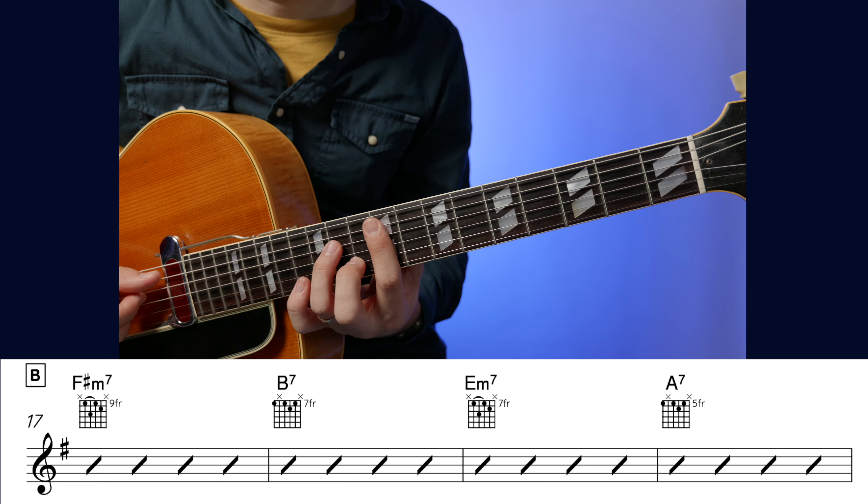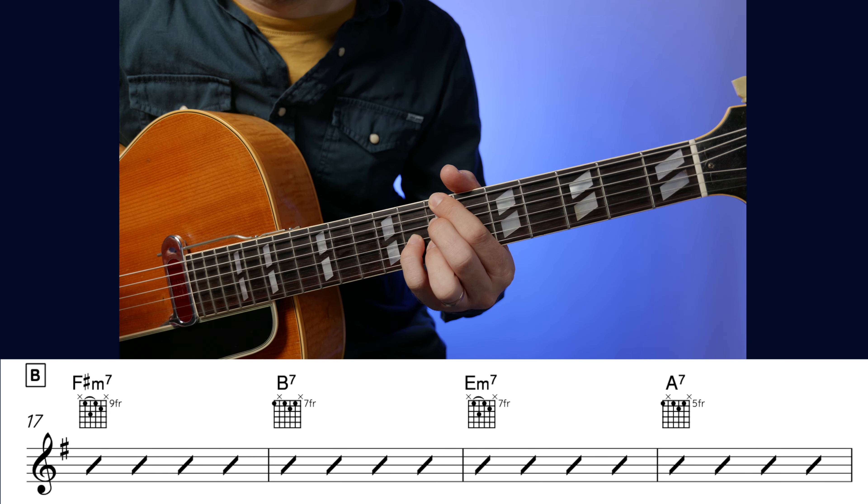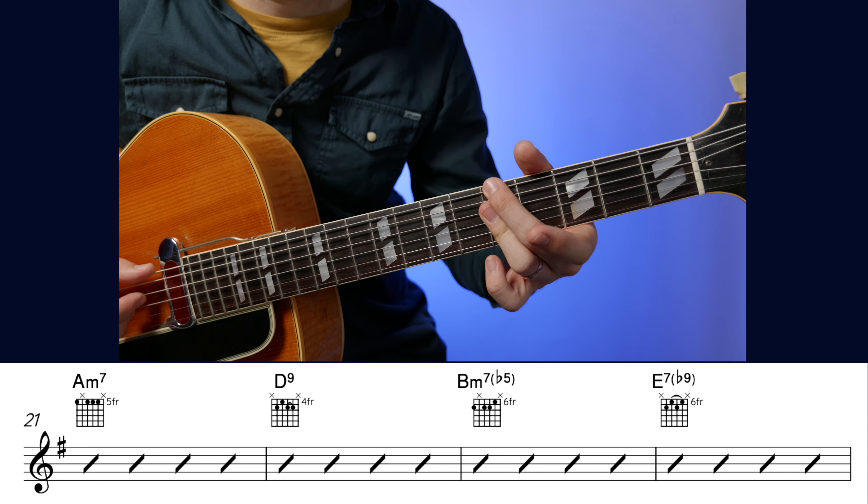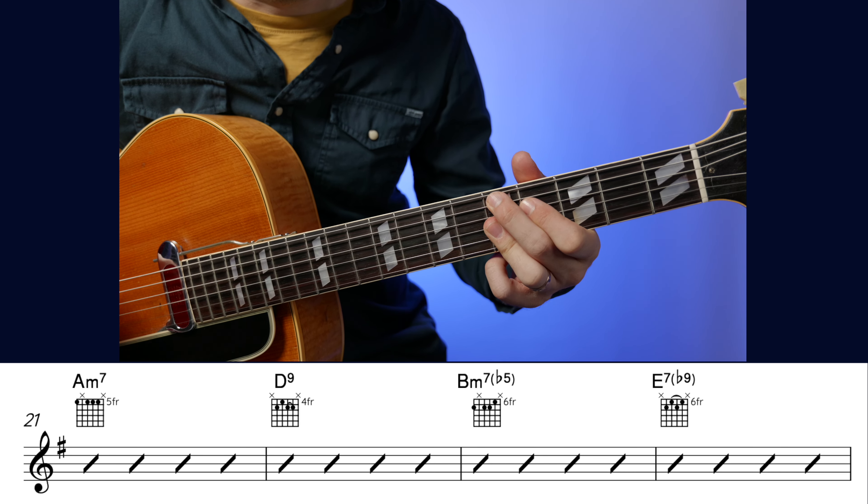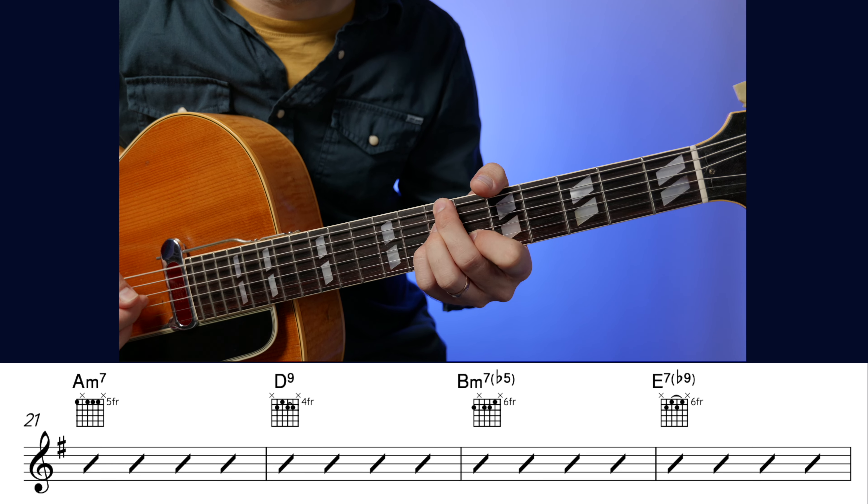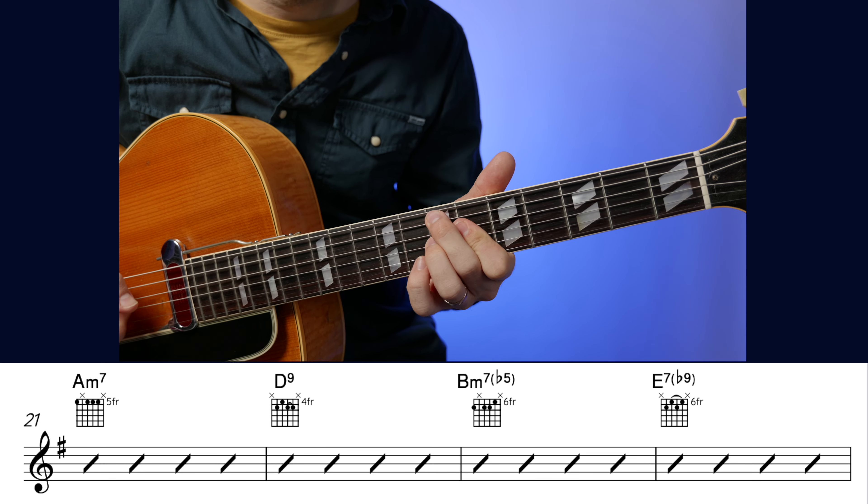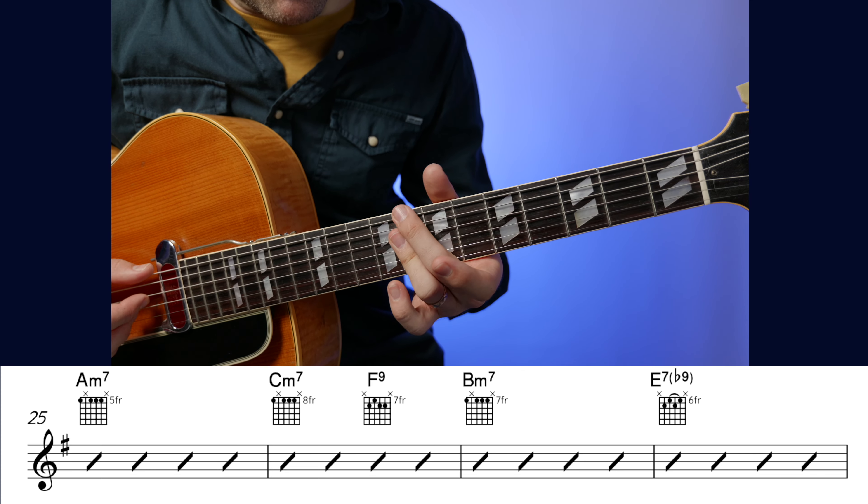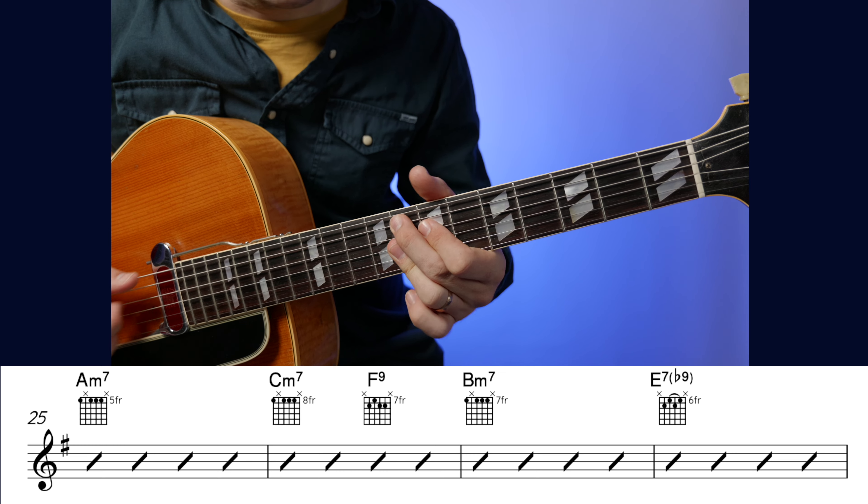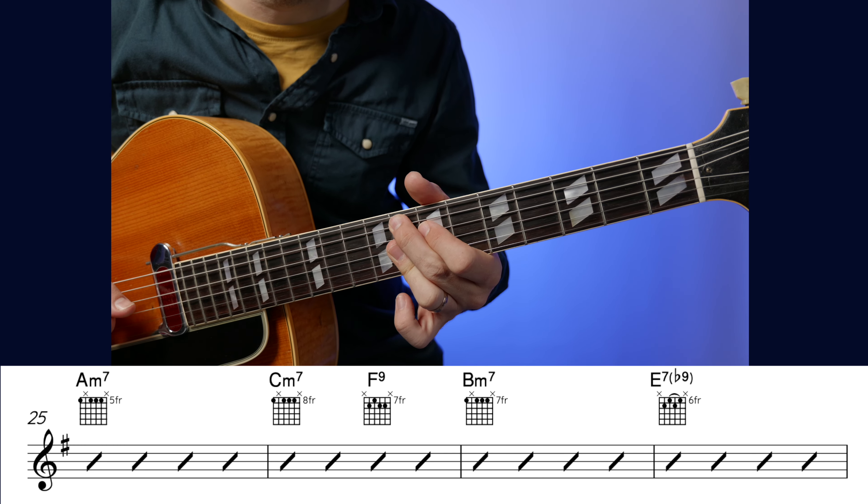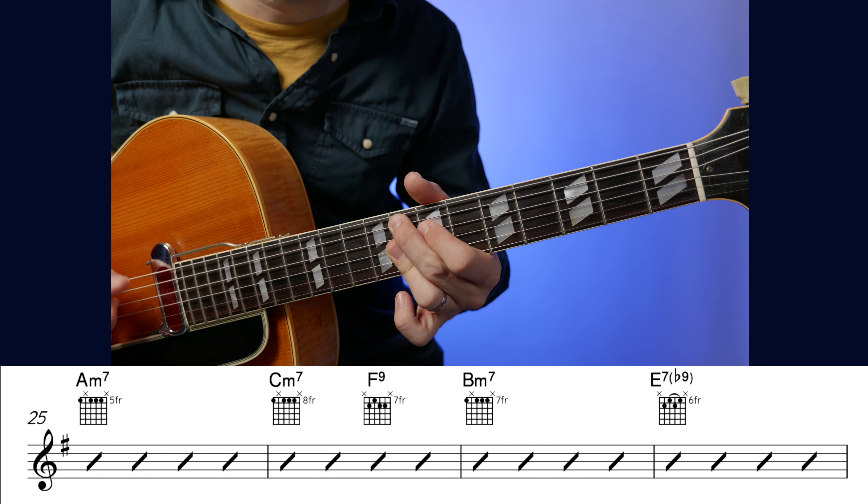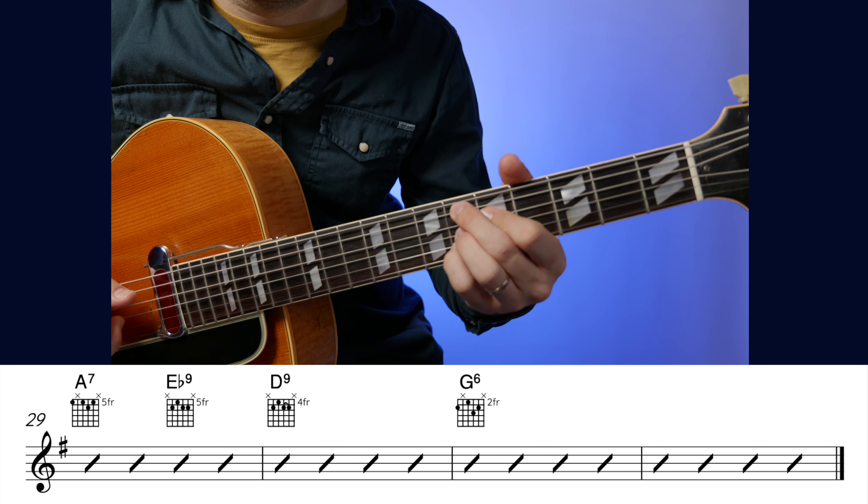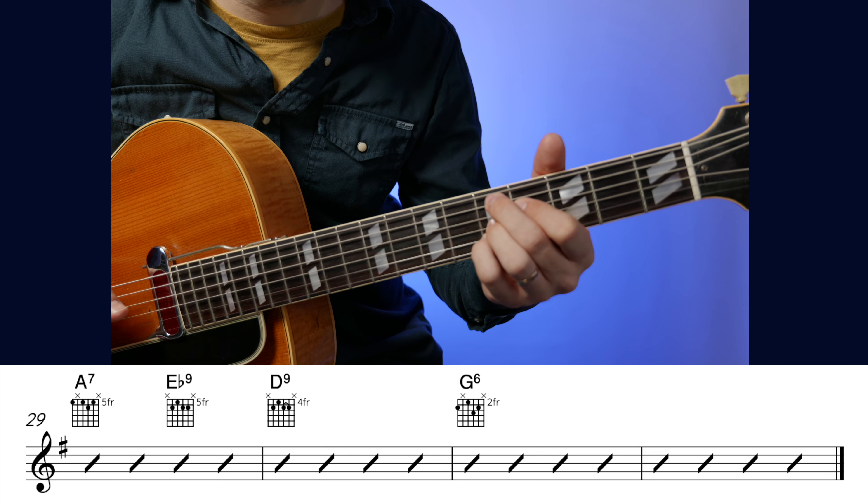Now the B section starts exactly the same as the A section. So we've got a bar of F sharp minor 7 to B7, leading to E minor 7 to A7. Second line of that section, A minor 7 again, just the same as the start, and to D9. And a nice harmonic twist here going to B minor 7 flat 5 to an E7 flat 9, which leads us nicely into the last 8. The last 8 starts with A minor 7, and then up to C minor 7. Half a bar to F9. Then B minor 7 to E7 flat 9. And the last line goes A7, E flat 9, half a bar of each, to a bar of D9, then 2 bars of G6.